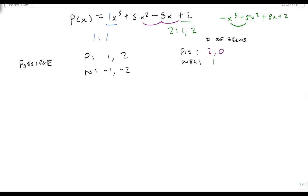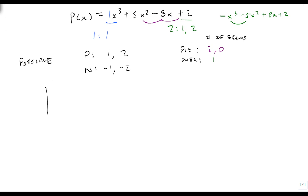Now we're ready to go. The very first thing we do is set up and write out 1, 5, minus 8, 2, and we're going to pick a zero. I'm going to start with the positives because there's two of those, and I'm going to start with positive 2.